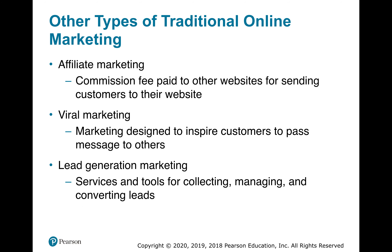Other types of traditional online marketing include affiliate marketing, which is a commission fee paid to other websites for sending customers. You're also seeing affiliate marketing with bloggers and Instagram stars — if they promote an item or a brand, they get a commission or a percentage of the proceeds from the sales. Viral marketing is marketing designed to inspire customers to pass messages to others. Lead generation marketing involves services and tools for collecting, managing, and converting leads.